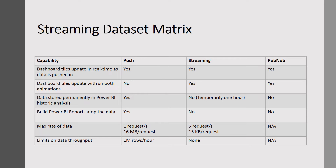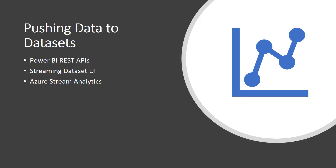This table explains the differences between the three types of datasets. There are three primary ways you can push data into a dataset: by using the Power BI REST APIs, which can create and send data to push and streaming datasets; by using the streaming dataset UI in the Power BI service by selecting the API approach; or by using Azure Streaming Analytics, where you can add Power BI as an output and visualize data streams in real-time.